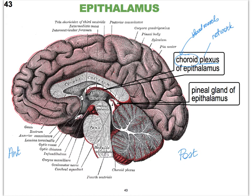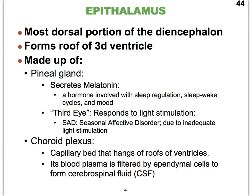On the very posterior side of the thalamus, we have a little gland that is considered part of the epithalamus, which is called the pineal gland, sometimes called the pineal body. So the epithalamus is made up primarily of the pineal gland and the choroid plexus.